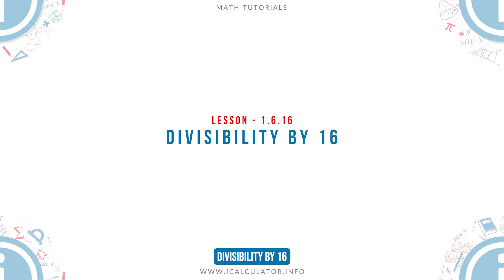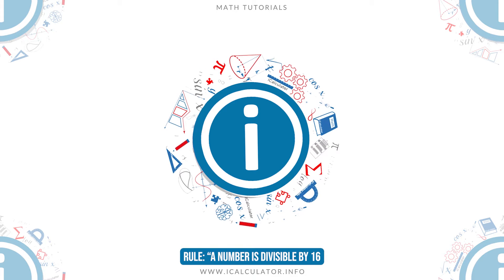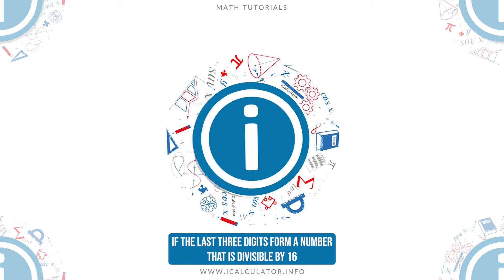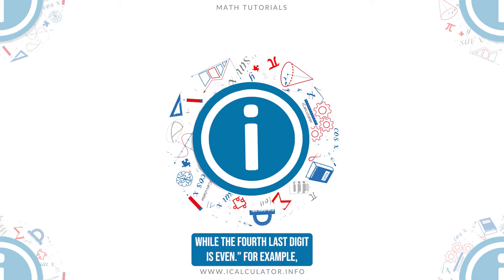Divisibility by 16 Rule: a number is divisible by 16 if the last three digits form a number that is divisible by 16 while the fourth last digit is even.